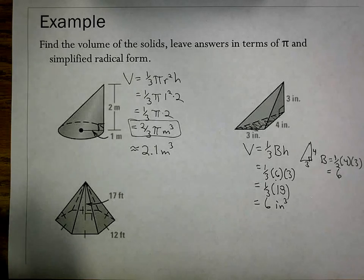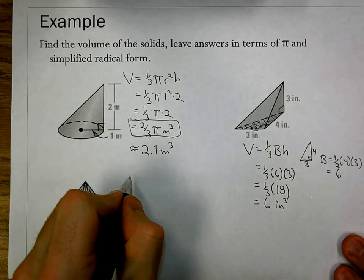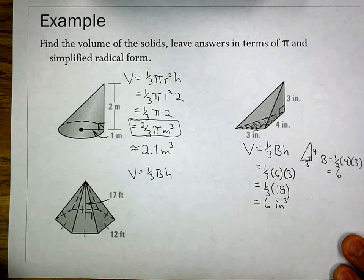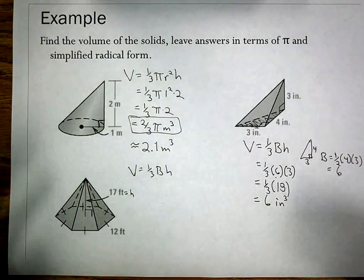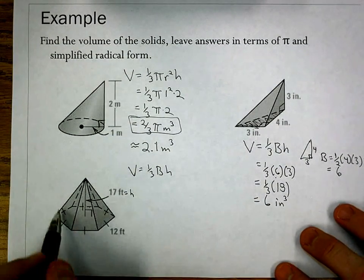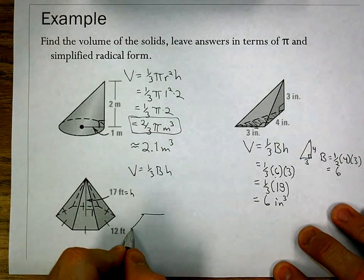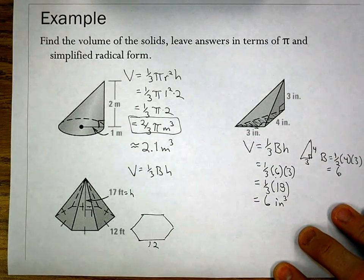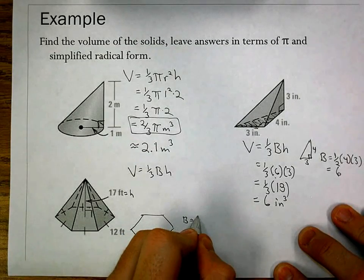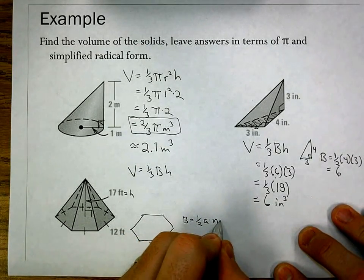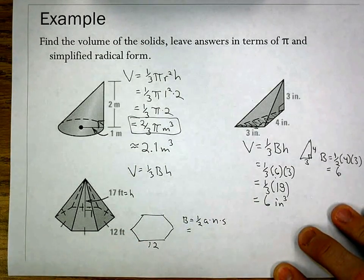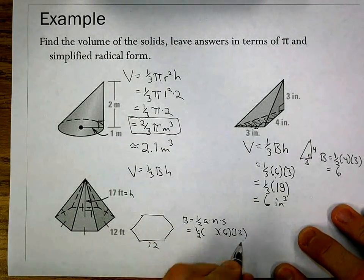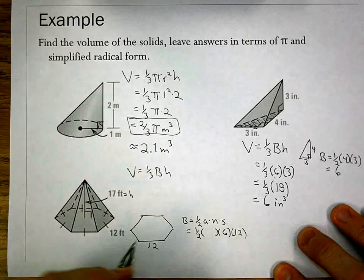Last one we have is our hexagonal pyramid. We write our formula. It's one-third the base area times the height. We already know the height is 17, but we're going to have to do a little bit of work here to find the area of our base, which is a hexagon. Since we know our side lengths are 12, to find the base area it's one-half the apothem times the number of sides times the side length. We know the number of sides is 6 and the side lengths are 12. We need to find what the apothem is.